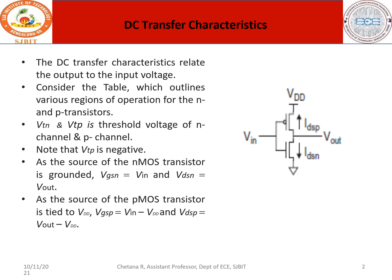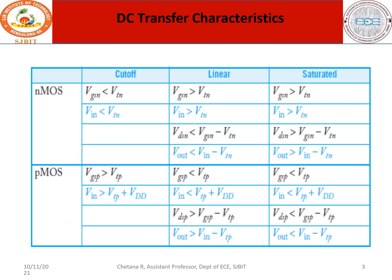When considering the PMOS transistor, it is tied to VDD. So what is VGSP? The gate is your G and the source is connected to VDD, so VGSP equals input minus VDD. Similarly, VDSP equals Vout minus VDD, because there is no low potential — everything goes from high to low, so the difference between drain and source is Vout minus VDD.